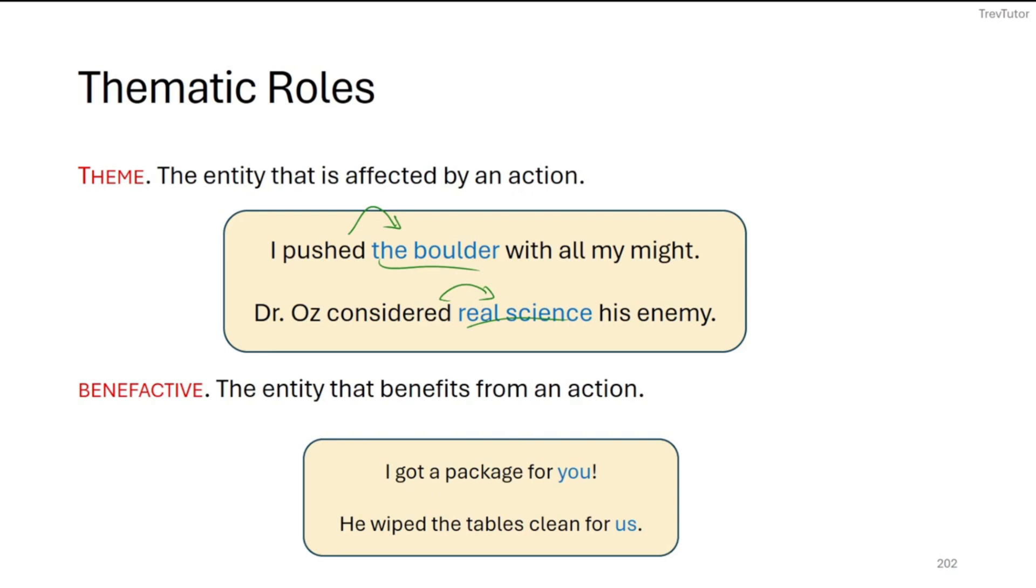Now we also have benefactives which appear in indirect object positions. So the entity that benefits from an action, I have a package for you. So in terms of giving something, you give a theme to a recipient or benefactive. You might also see recipient—some books distinguish between the two, some don't. If there is a distinction between the two, you can think of recipients as being after 'to' and benefactives as being after 'for.' So he wiped the tables clean for us. The wiping the tables is done for a purpose, for someone, which is us in this case. So us would be the benefactive of this.